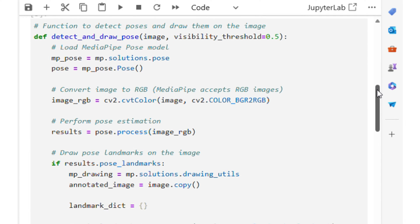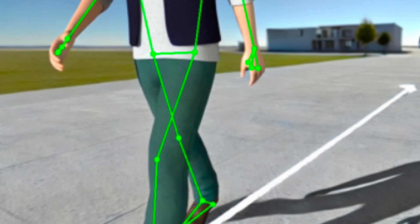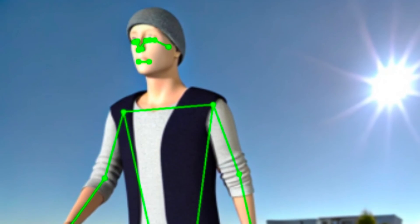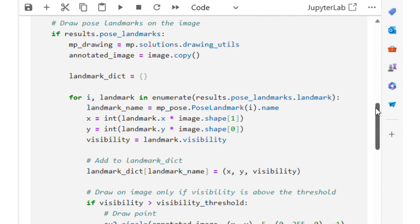Next, I define a function to detect poses and draw the landmarks on the image. That is the function will draw the landmark points and draw a skeleton structure using points on the actual image. Here is an example of the drawn points and lines we will see soon. This function will also return a dictionary of landmarks and their visibility scores.